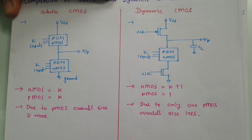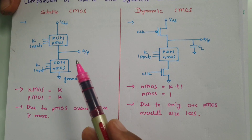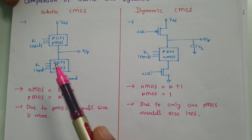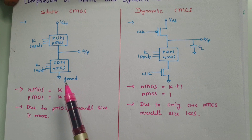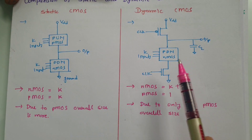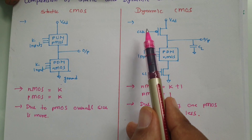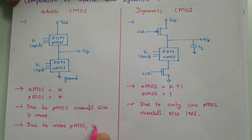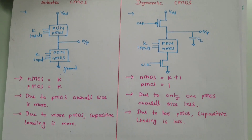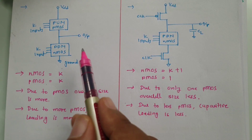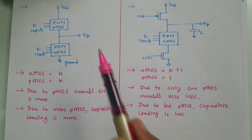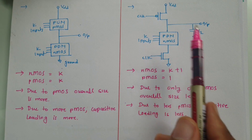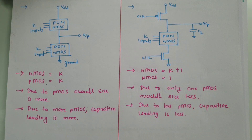When we talk about capacitive loading, it is higher due to PMOS since PMOS size is larger. So in static CMOS, capacitive loading is more, while in dynamic CMOS with only one PMOS, capacitive loading is less. Additionally, because of more PMOS in static CMOS, switching characteristics are slower, while with only one PMOS in dynamic CMOS, switching characteristics are faster.